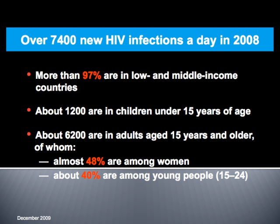People newly infected per year: 2.7 million. We have about 3 million people getting infected every year, and it's on the rise. There were 2 million deaths in 2008 alone because of AIDS. You can see the problem and the intensity of AIDS. Also keep in mind a very high death toll for children under 15 years. 7,400 new HIV infections a day — you can imagine the intensity and the pressure on the physician, pharmacist, and industry.